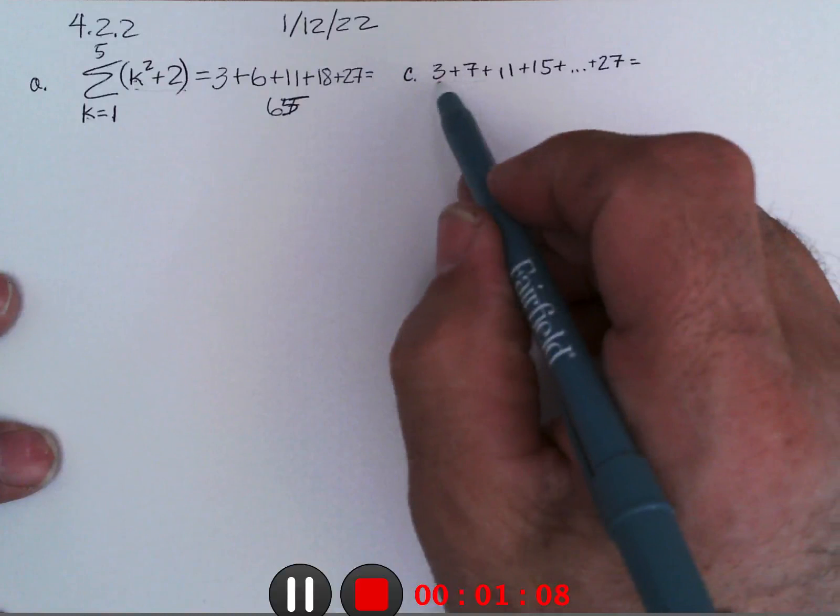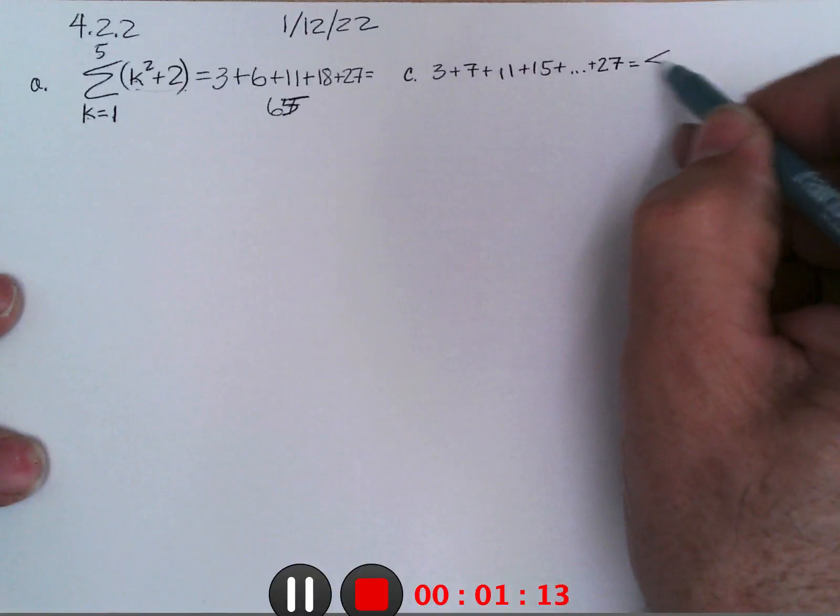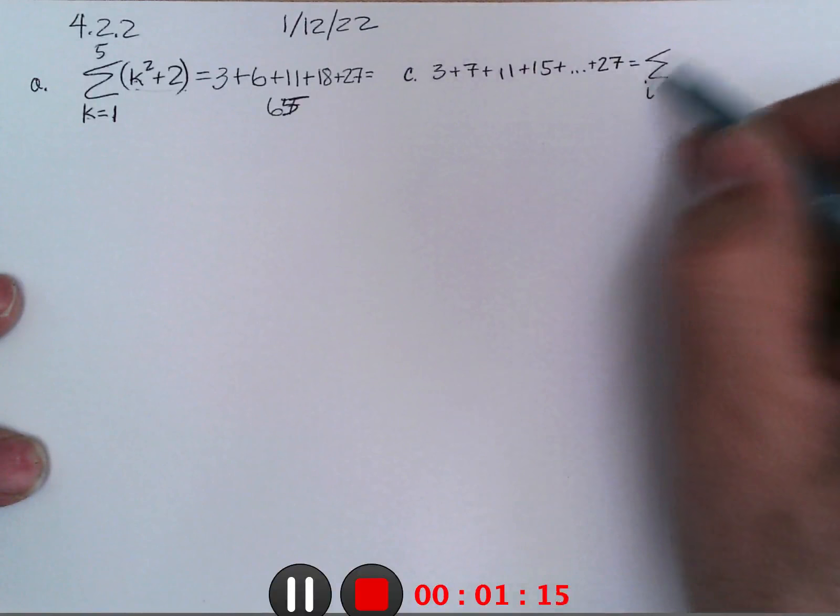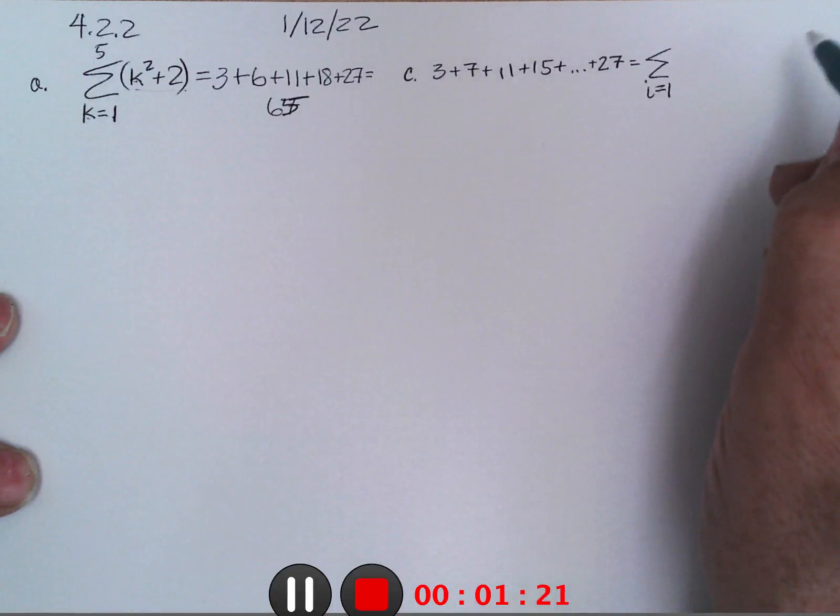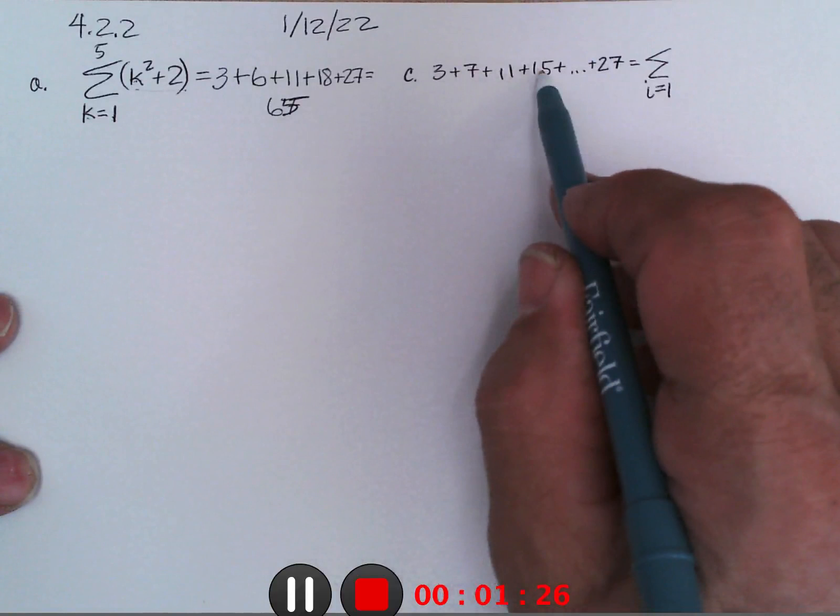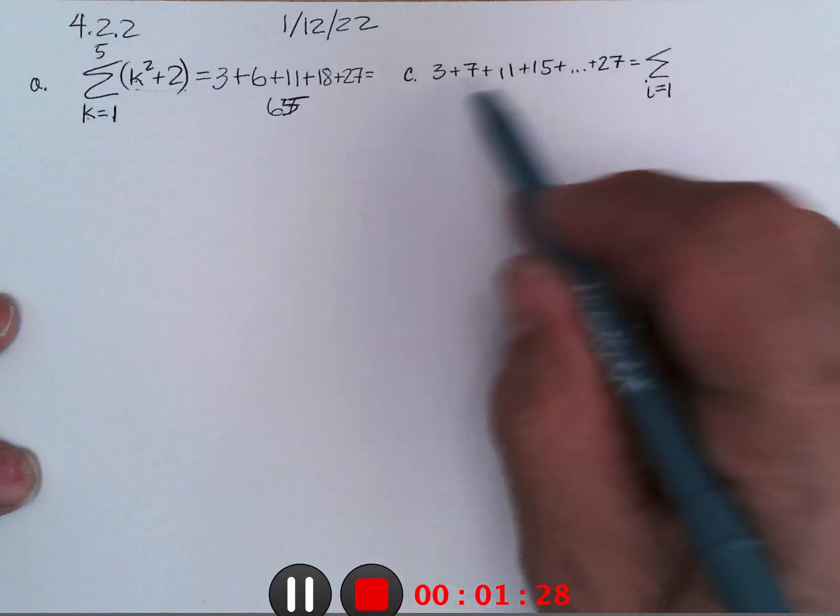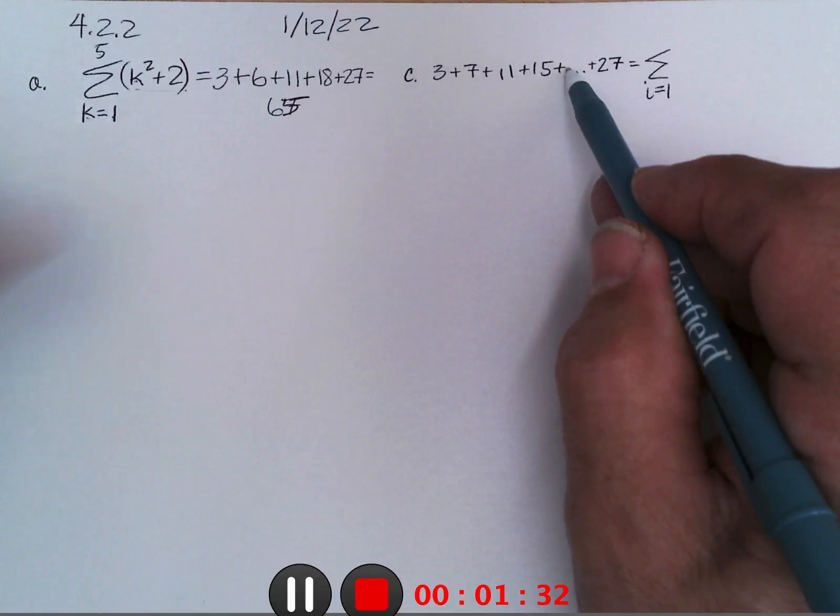Then this one, we were supposed to write it in summation notation. I'll use i, could use K, could use any letter. I want to start it at 1, and let's see how many terms do we have: 3, 4, 7, 11, 15. It looks like it's going up by 4, so then 19 would be the 5th term.